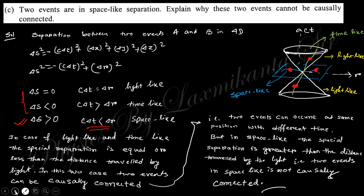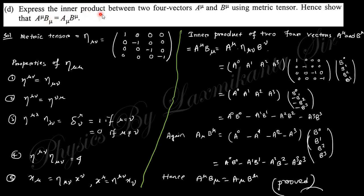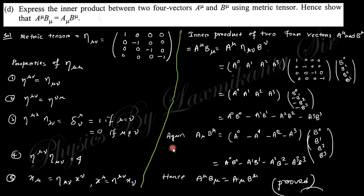The next question: express the inner product between two four-vectors A^μ and B_μ using the metric tensor, and show that A^μ B_μ = A_μ B^μ. The metric tensor has the time component and space components with appropriate signs. Using the covariant-contravariant form and its properties, the inner product can be expressed, and through matrix multiplication one obtains the result. Interchanging the two quantities gives the same result, confirming symmetry.